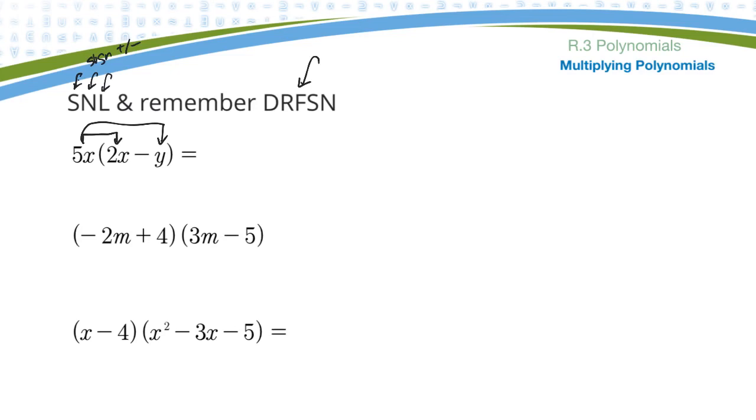So what sign it'll be? Positive times positive is positive, which I don't need to write, but I'll put it in. Number, 5 times 2 is 10. Letters, x times x would be x squared. Okay, and then let's do this part. So 5xy times minus y. Sign first. Positive times negative is a negative. 5 times 1 would be 5. And then x times y would just be xy.